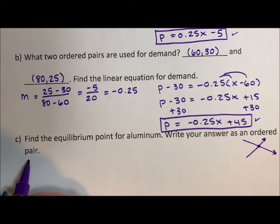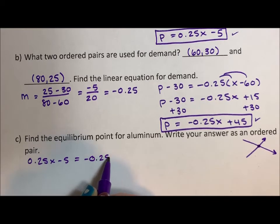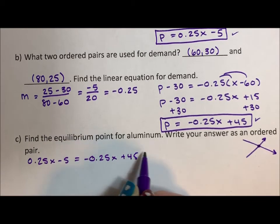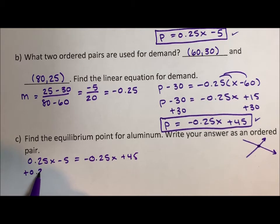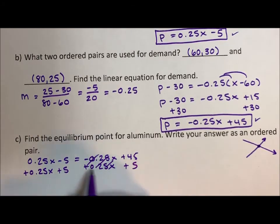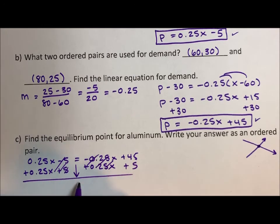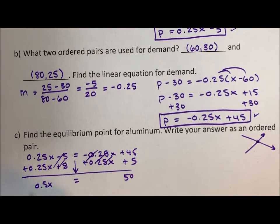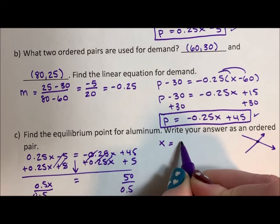So I want to know when 0.25 x minus 5 is equal to negative 0.25 x plus 45. So I'm going to add the 0.25 x to both sides. And I'm going to add the 5 to both sides. So I have 0.5 x is equal to 50. Divide by 0.5 and I'm going to get that x is equal to 100.